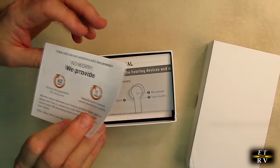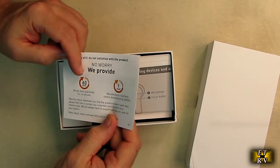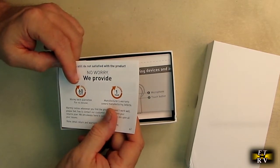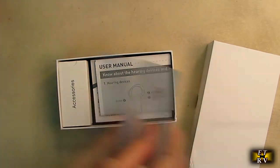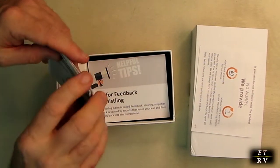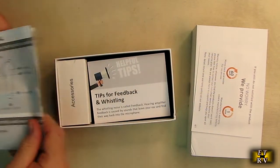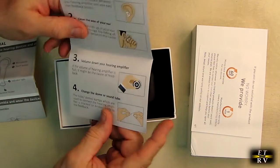It talks about the warranty, 60-day return, one-year manufacturer warranty. Then we have the actual user's manual that tells you how to use the hearing aids and gives tips for avoiding feedback and whistling.